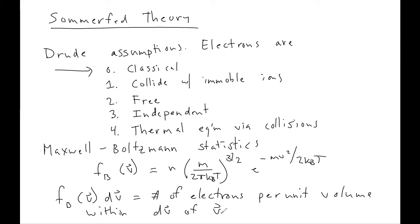Now, as we've seen, this Drude model, which assumes classical Maxwell-Boltzmann statistics for the electrons, gives surprisingly accurate predictions for things like the Hall coefficient, magnetic resistance, and Wiedemann-Franz law. We talked a little bit in previous mini-lectures about how the accuracy of the Wiedemann-Franz law relies on two errors that cancel each other out. In the Drude model, we compute the value of the mean squared velocity that is empirically too small, and we compute a specific heat that is too large, and these errors cancel out in the Wiedemann-Franz law.